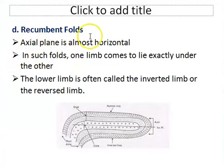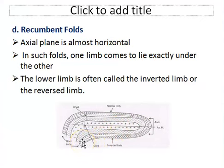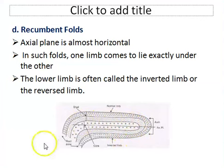The next fold type is the recumbent fold. In a recumbent fold, the limbs are horizontal due to intense folding and the axial plane is also almost horizontal. In such folds, one limb comes to lie exactly under the other limb — the lower limb is known as the inverted limb while the upper limb is known as the normal limb.